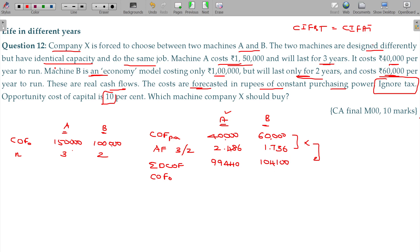Apart from that, initially we have invested this amount also, 1,50,000 and 1,00,000. Then total cash outflow, summation of discounted cash outflow in total. In total, 2,49,440 initially. Here the value being 2,04,100.